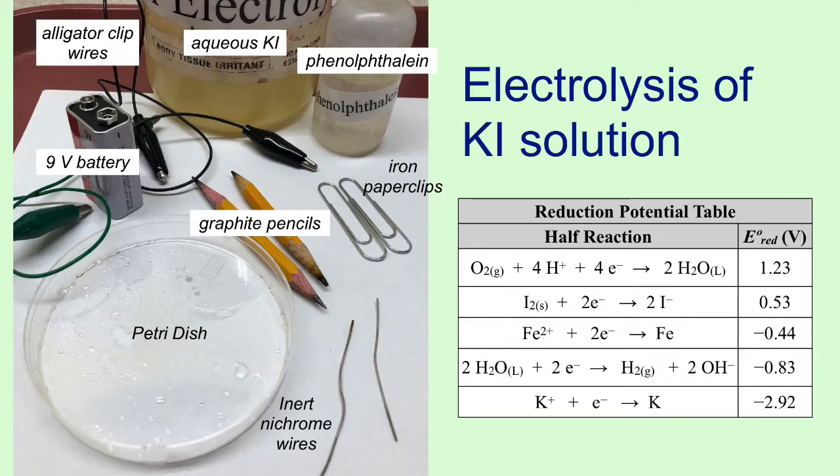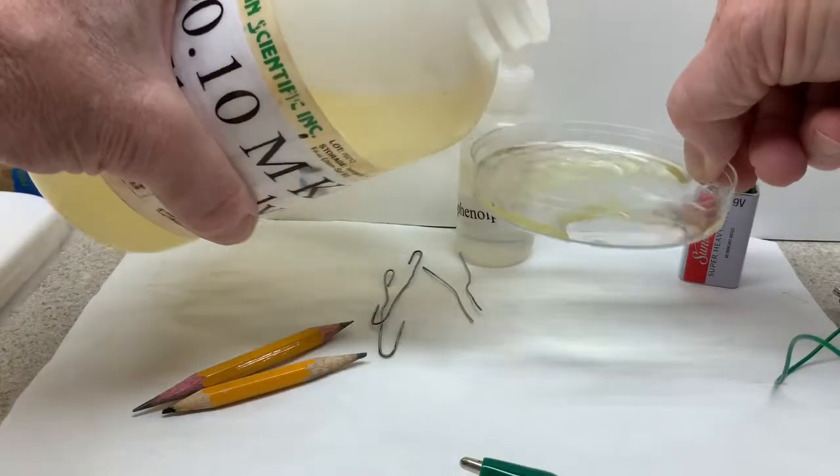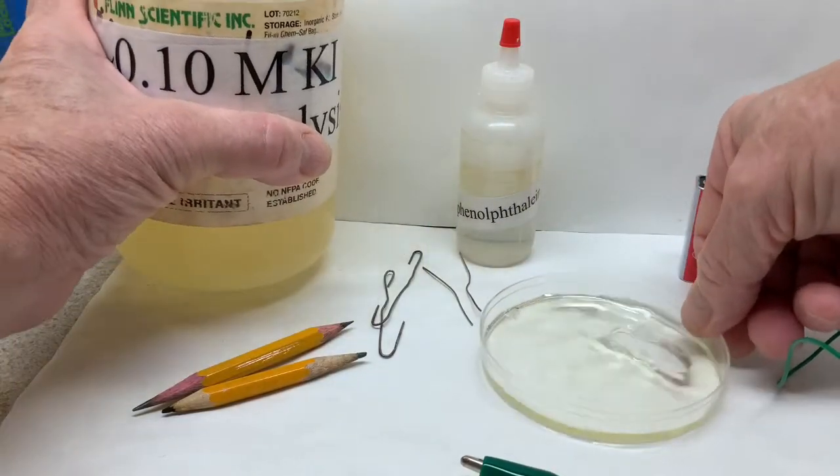This is lab B5, electrolysis of potassium iodide. Pouring a solution of potassium iodide into the dish.